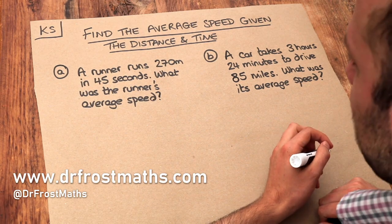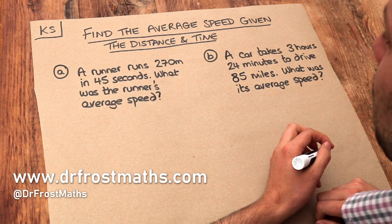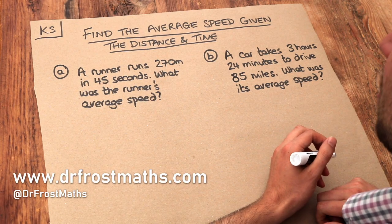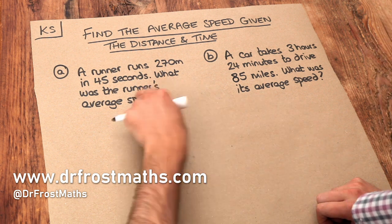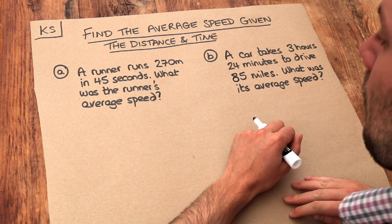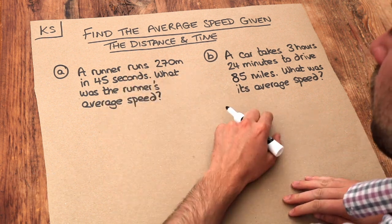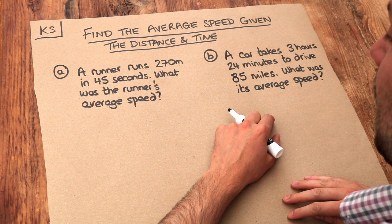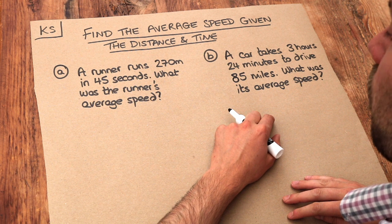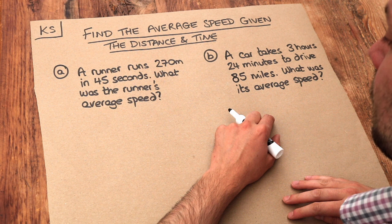Hello and welcome to this Dr. Rosemath's key skill video on finding the average speed given the distance and time. Let's read this first problem. A runner runs 270 meters in 45 seconds. What was the runner's average speed?